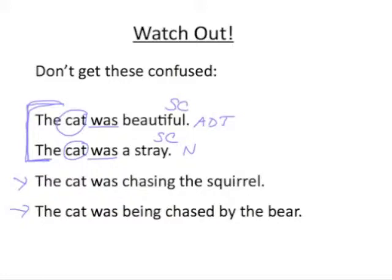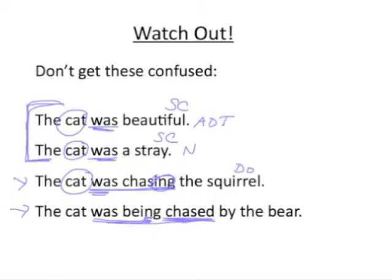'The cat was chasing the squirrel' — that's 'was chasing' in the past progressive tense: to be as auxiliary plus the present participle. In 'the cat was being chased by the bear,' we have an -ing form suggesting a progressive tense, but we also have 'to be' plus the past participle, which signals the passive voice. So this last sentence is in the passive voice in the past progressive tense.